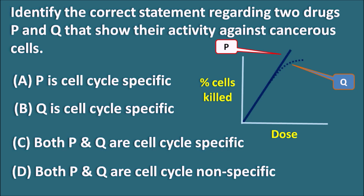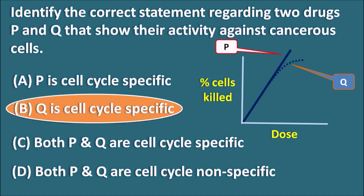The right answer is B — Q is cell cycle specific. The cell cycle specific drug gives a plot which is a straight line up to a certain dose, followed by a curved line with a plateau phase.